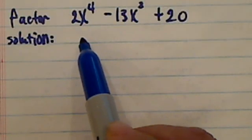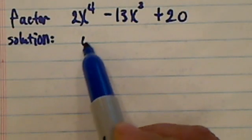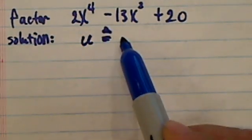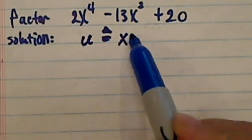In order to solve this problem, we need a substitution. Let variable u, by definition, that's this little triangle here, equal to x squared.